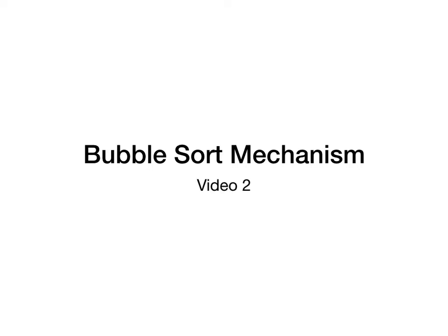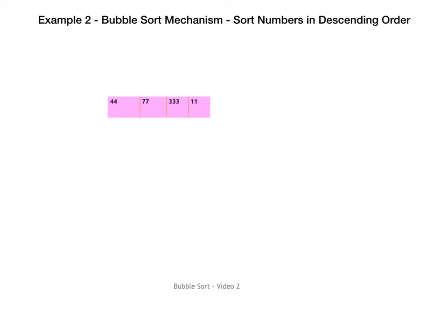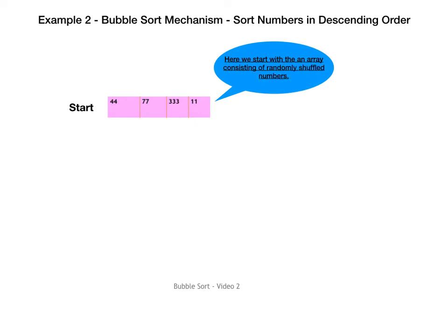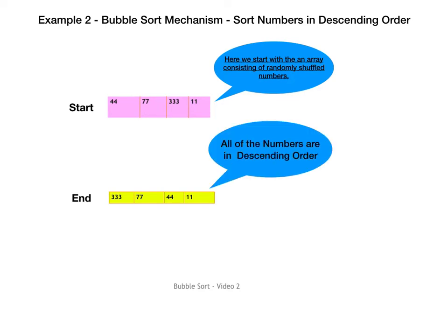This is the second video in the series on bubble sort, and here we will look at another example of the bubble sort mechanism. We start with an array with the numbers 44, 77, 333, and 11 — randomly shuffled numbers — and what we want to do is sort them in descending order: 333, 77, 44, and 11. There are a number of sort algorithms, but in this particular case we will use bubble sort.